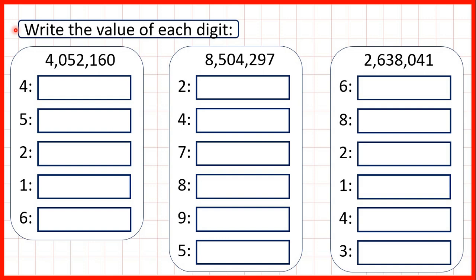Now we need to write the value of each digit. So first we have the number four million fifty two thousand one hundred and sixty. The four is in our millions place value so it stands for four million. That's four with six zeros on the end, because notice in our number after the four we have one, two, three, four, five, six zeros.